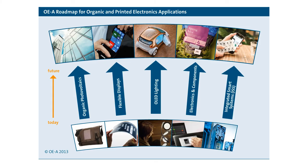A roadmap for organic and printed electronic applications emerging from today to the future is shown here. These are organic photovoltaics, flexible displays, OLED lighting, electronics and components, and integrated smart systems.